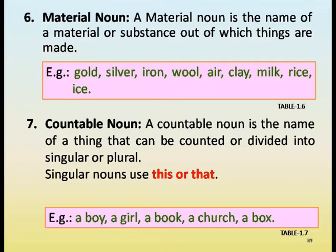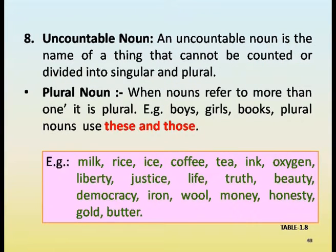Countable noun is the name of a thing that can be counted or divided into singular or plural. Singular nouns use this or that. Plural nouns refer to more than one — for example, boys, girls, books — and use these and those.